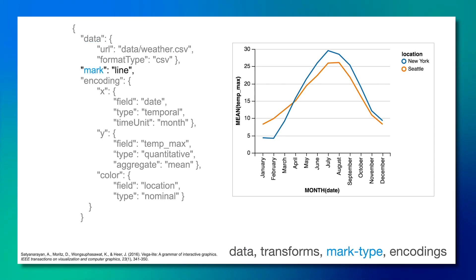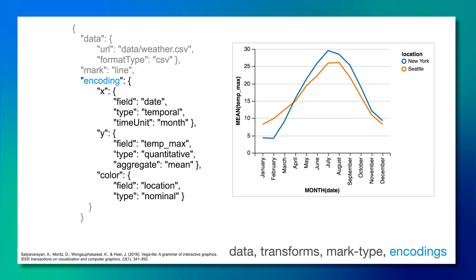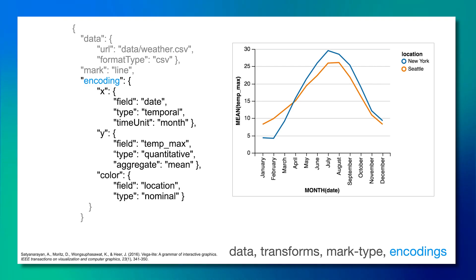The next element is the mark type. Here our mark is a line — you could change this to a bar, area, circle, or dot. This specifies what is being drawn on the page. The next element is the encoding, where we identify the visual attributes of that mark type. We are using position: on the x-axis we have date, and on the y-axis we have temperature. We're also specifying the type of information — for x it's temporal, for y it's quantitative — which helps Vega-Lite determine the appropriate scale to automatically generate. On the y-axis, we're also doing an aggregation computing the mean.